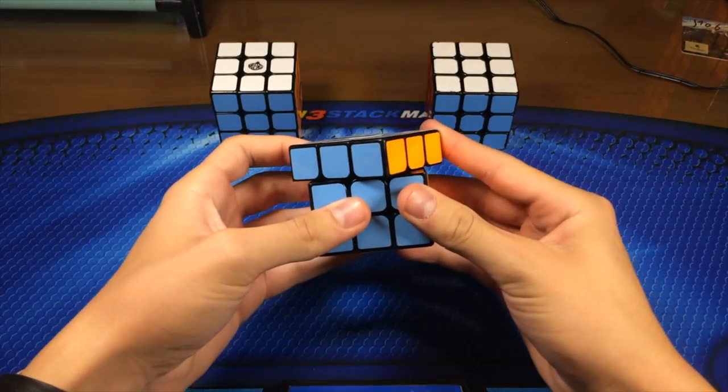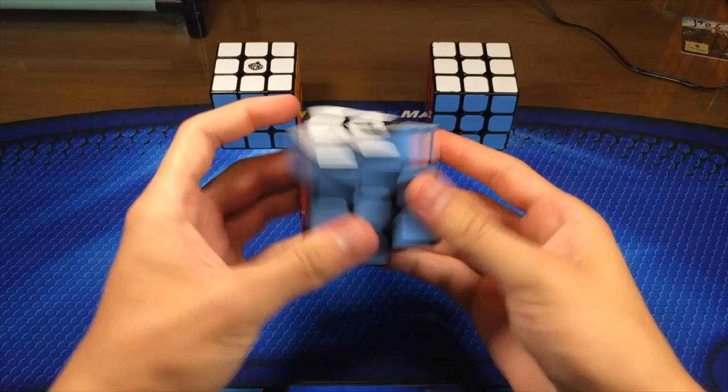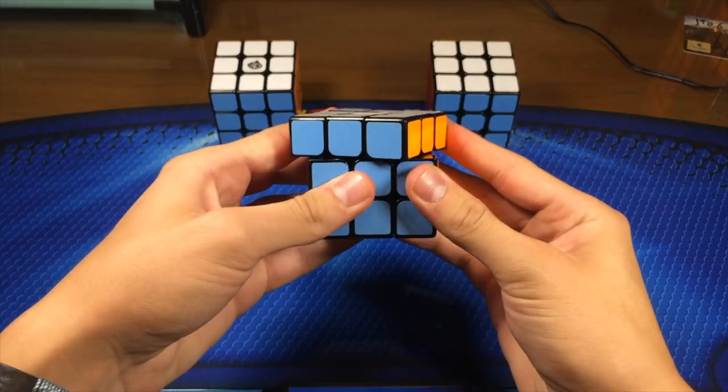So the corner cutting on the Mei Yang is pretty good. It's pretty much like all the rest of the 3x3s in the market. Just over 45 degrees with these, and just under the line for reverse.